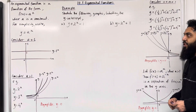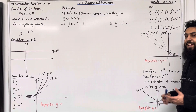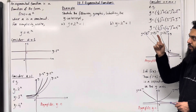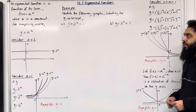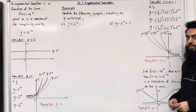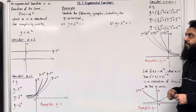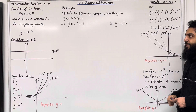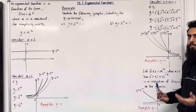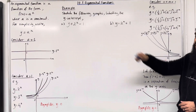Starting off with the definition of an exponential function. An exponential function is a function of the form f(x) = a^x, where a is a constant. Any function where the variable is in the power is called an exponential function. For simplicity, let's write y = a^x.